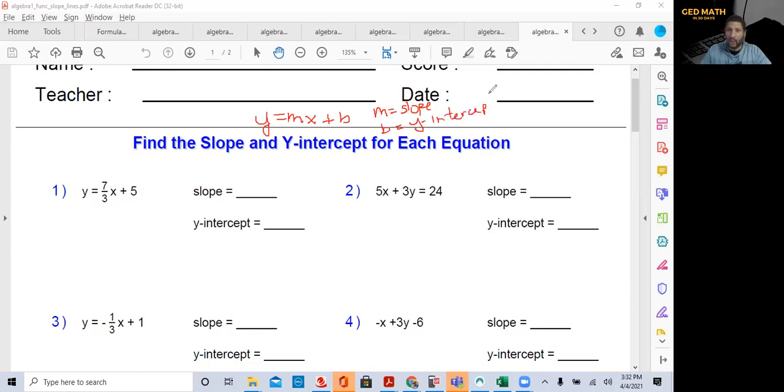So again, we know slope is the steepness of a line, and we know the y-intercept is where the line crosses the y-axis. So we're going to go over, this should be a short video, I'm going to show you how to find the slope of a line from an equation.